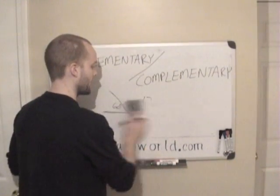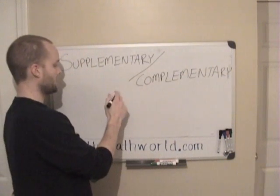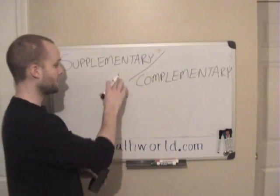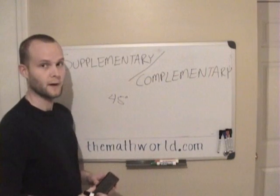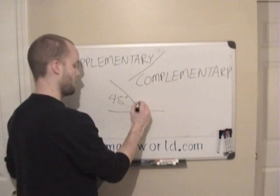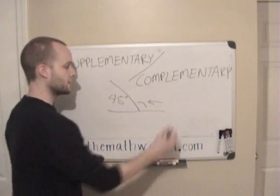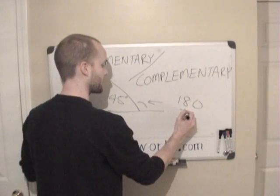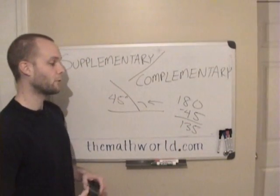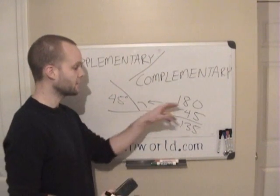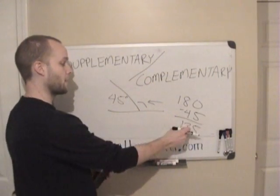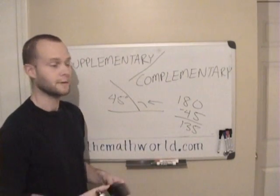Let's take a look at another one. Let's say we're given 45 degrees and they don't even give us any angles — all they say is find the supplementary angle for 45 degrees. All we have to do is take 180 and subtract 45, and we're left with 135. So the supplementary angle for 45 is 135. Just subtract the number you're given from 180, because 135 and 45 equal 180 degrees.